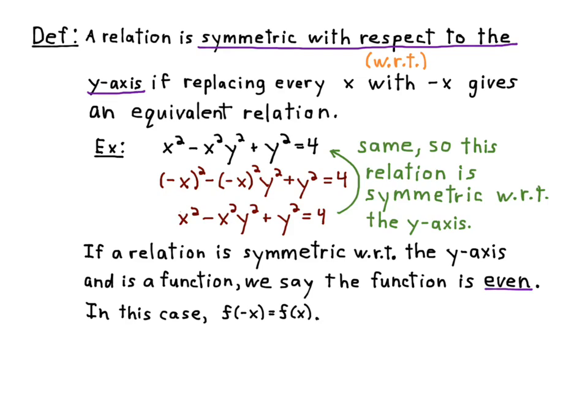So in this case, when a function is even, then f of negative x always equals f of x. So that's a test. If you want to test if something is even, just put in negative x for x and you get f of x, which is kind of what we were talking about before.